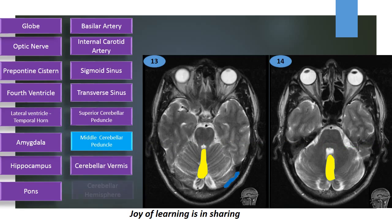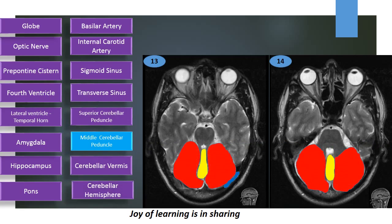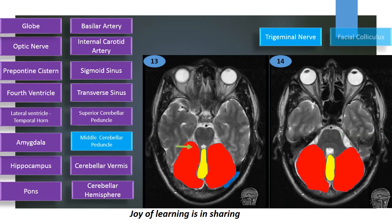Cerebellar vermis, cerebellar hemispheres, trigeminal nerve and facial colliculus in the dorsal median pons.